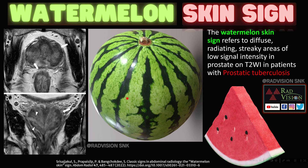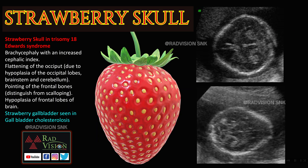This is the T2 weighted image showing the prostate. There are multiple hypo-intense linear striations noted in the prostate which mimic the typical skin of the watermelon. This is called the watermelon skin sign, which refers to diffuse radiating streaky hypo-intense areas in the prostate on T2 weighted images, typically seen in prostatic tuberculosis.